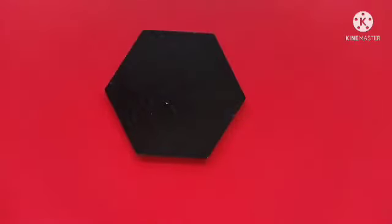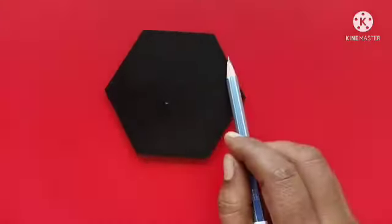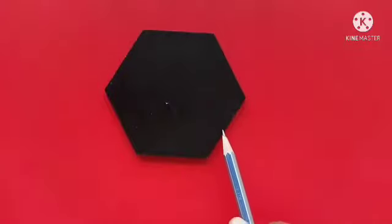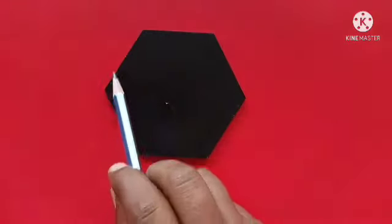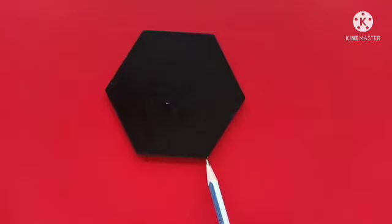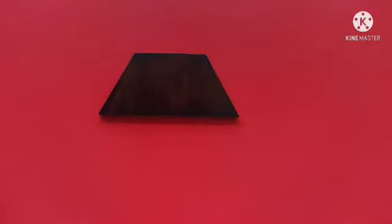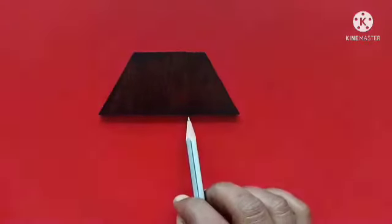How many sides and corners does the hexagon have? 1, 2, 3, 4, 5 and 6 — 6 sides. And 1, 2, 3, 4, 5, 6 — 6 corners. How many sides and corners does a trapezium have?